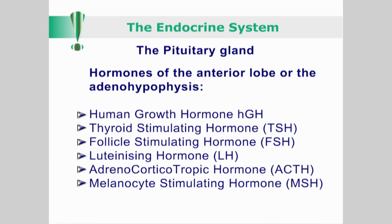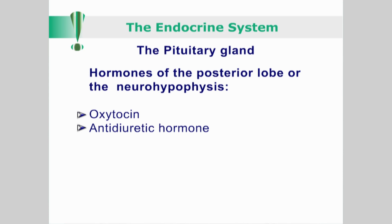Let us briefly review clinically important endocrine glands. The pituitary: the anterior lobe of the pituitary gland, or the adenohypophysis, secretes human growth hormone, thyroid stimulating hormone, follicle stimulating hormone, luteinizing hormone, adrenocorticotropic hormone, and melanocyte stimulating hormone. The posterior lobe of the pituitary, or the neurohypophysis, secretes oxytocin and antidiuretic hormone, which is also called vasopressin.